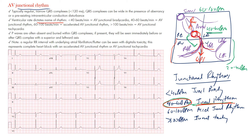The retrograde P wave won't have a normal axis because it travels in the opposite direction. You may see inverted P waves in the inferior leads as the impulse moves away from the AV node, or the P wave may be buried within the QRS complex, or even absent entirely.